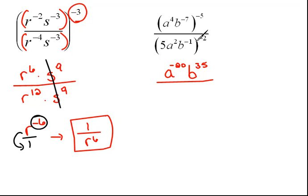Here we have 5 to the negative 2. I'm just going to go ahead and write that. a to the 2nd raised to the negative 2 would be a to the negative 4, and b to the negative 1 raised to the negative 2 would be b squared.